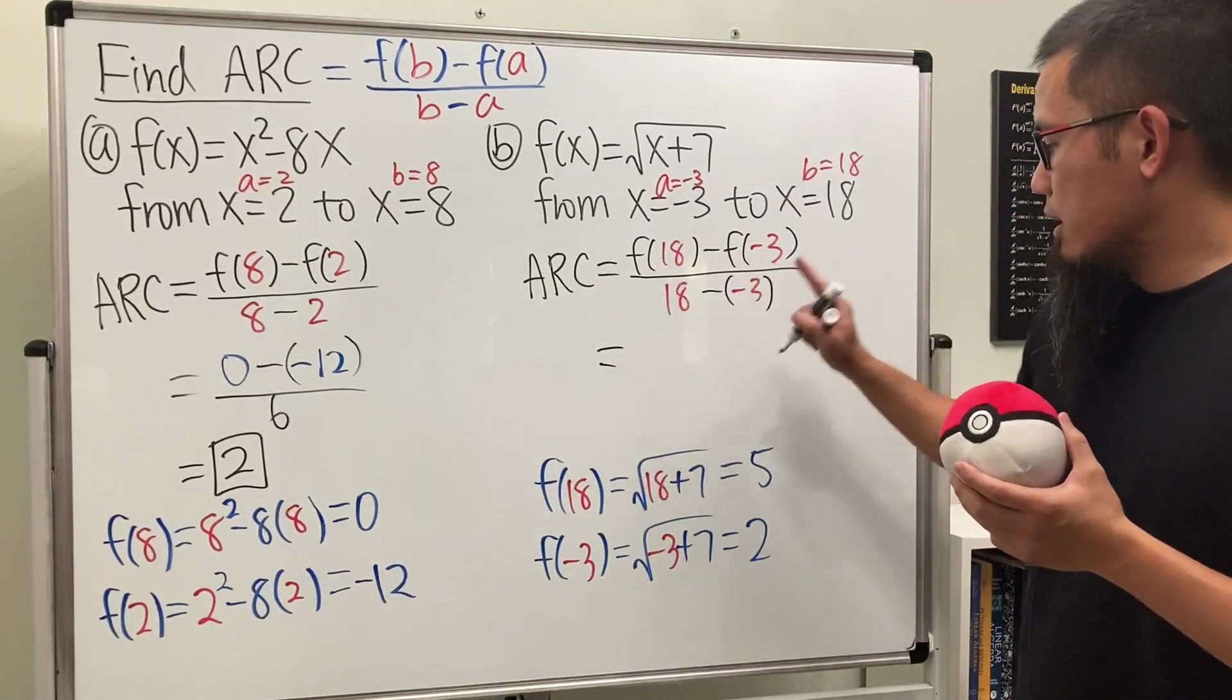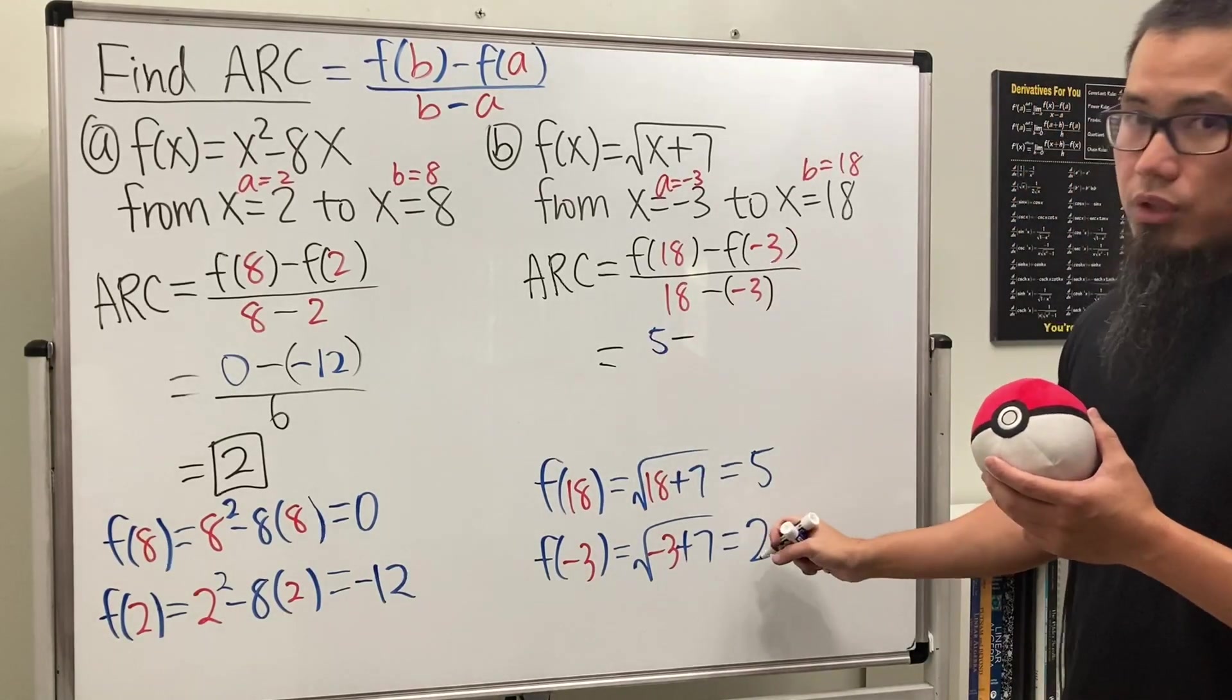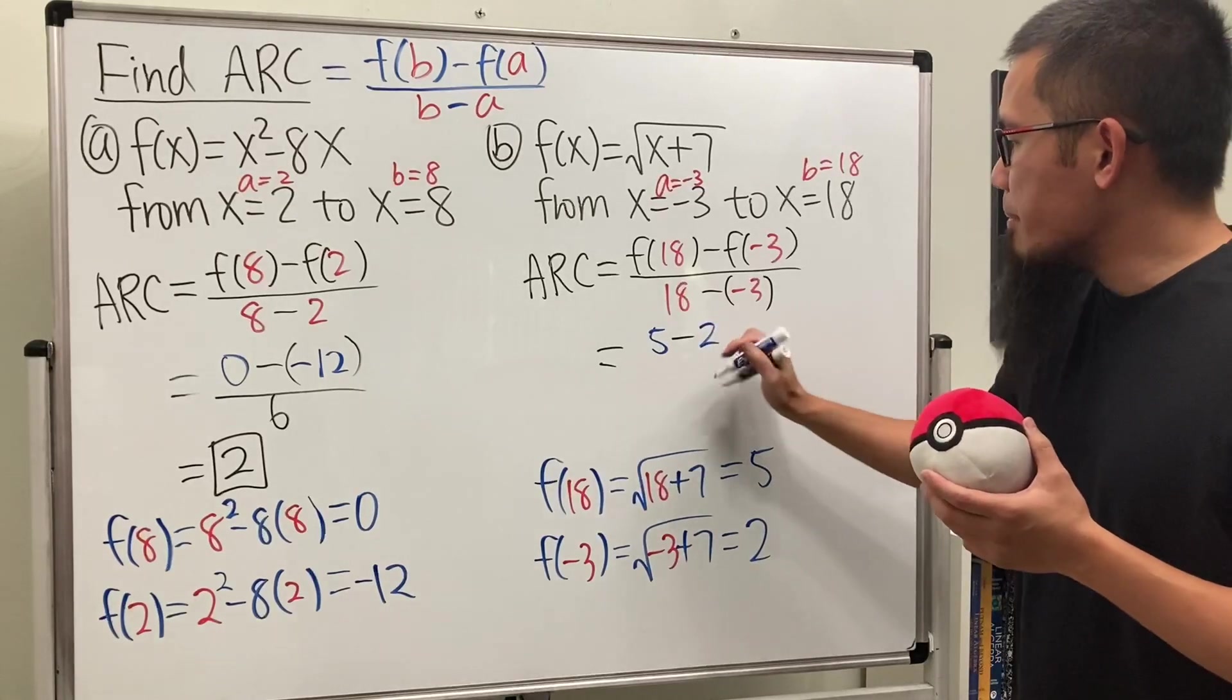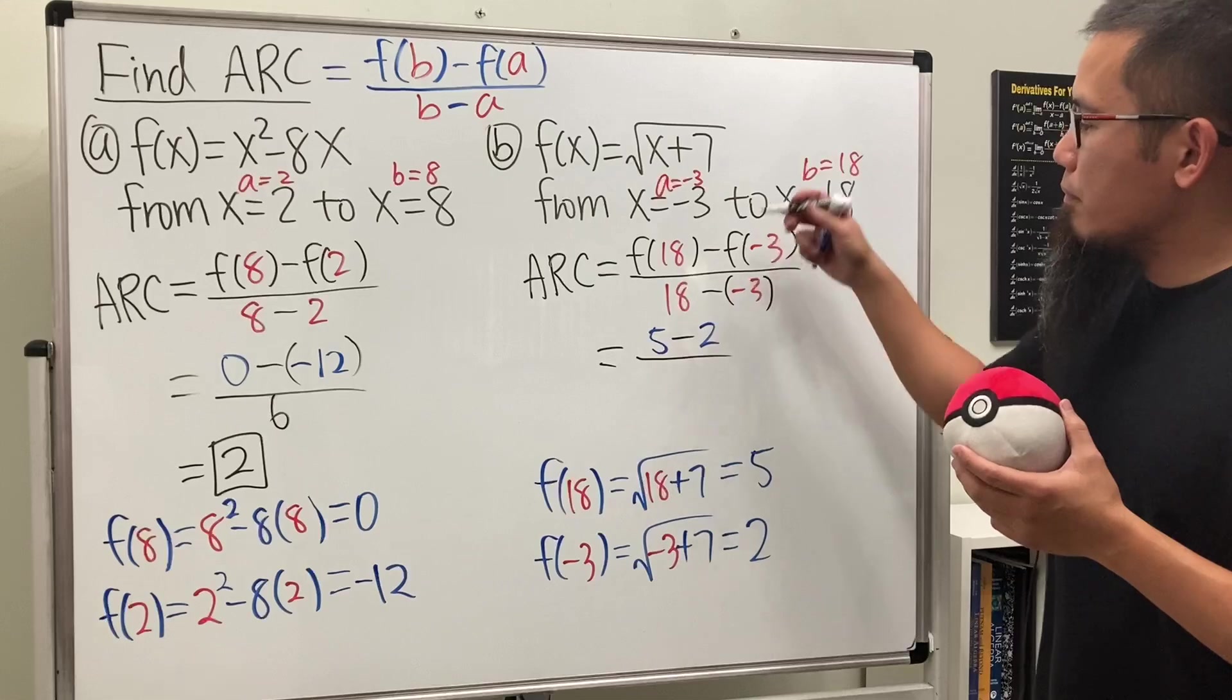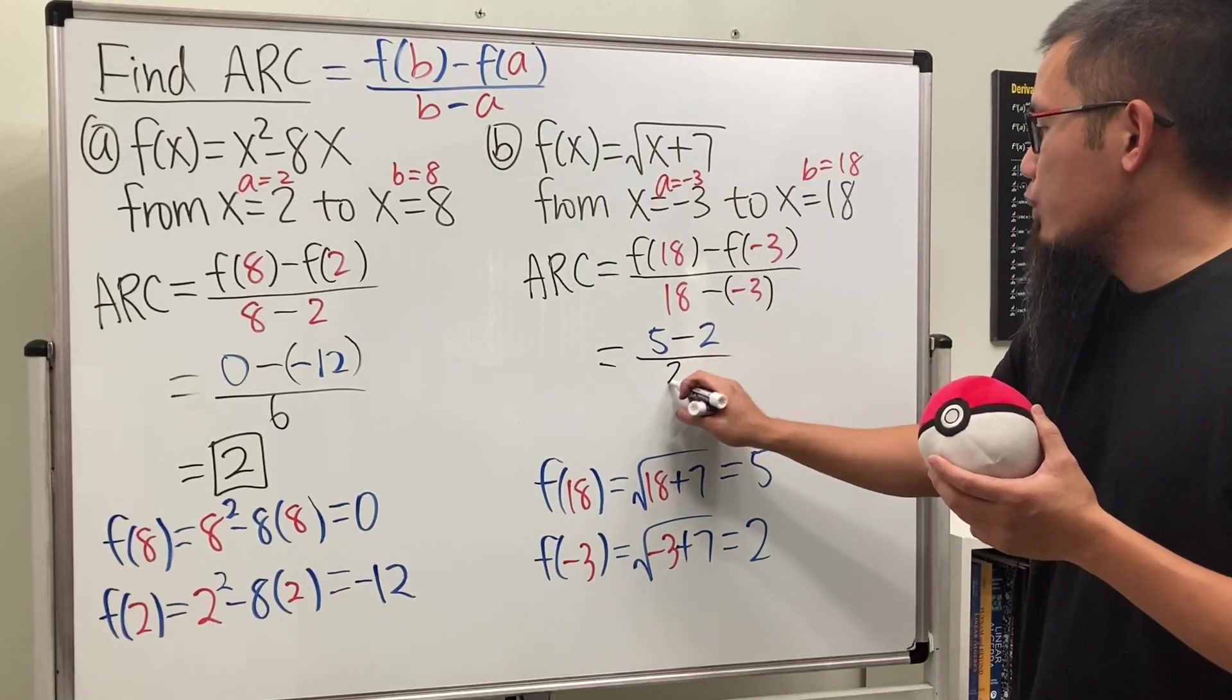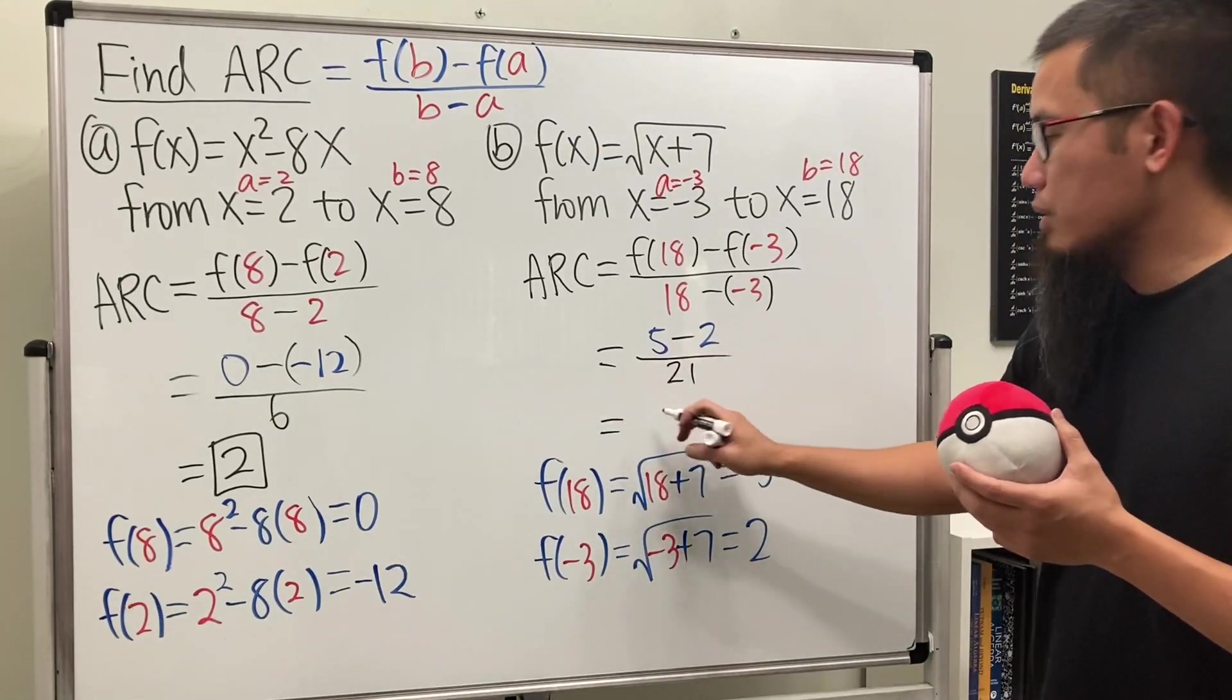Perfect. Now we get 5 and then minus this is just a 2, so 5 minus 2 on the top, over this is 18 plus 3 which is 21.